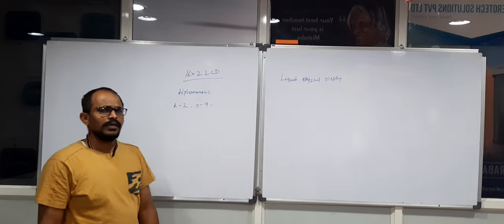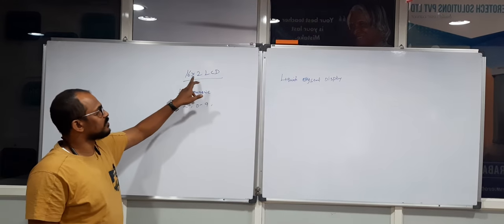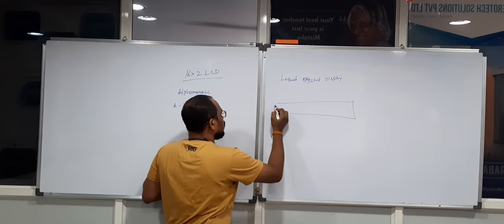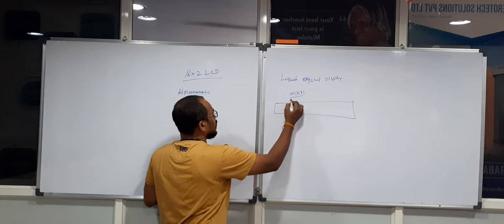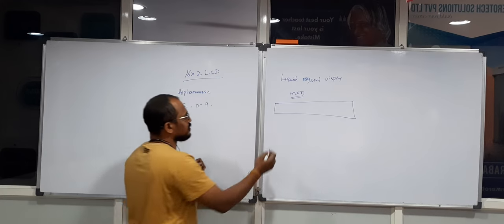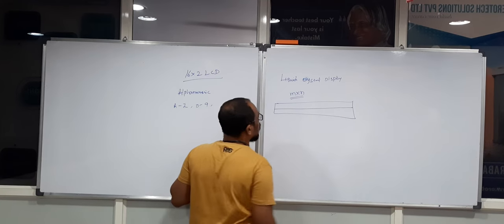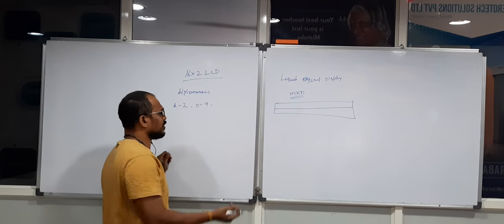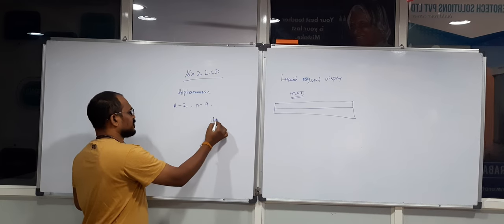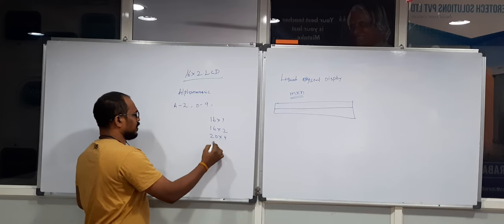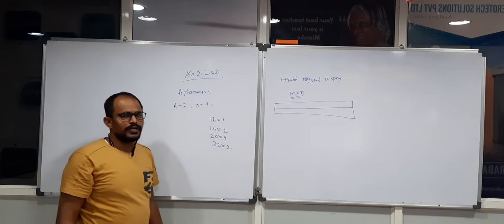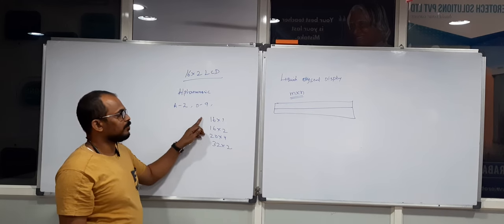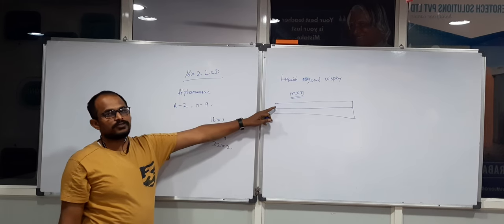LCDs are available in a matrix form, which is M x N. For example, 16x2 — M represents the number of characters per line and N represents how many lines it is going to support. There are different sizes of LCD screens: it may be 16x1, 16x2, 20x4, 32x2. Depending on your requirement, you can proceed with any different size LCD screen.